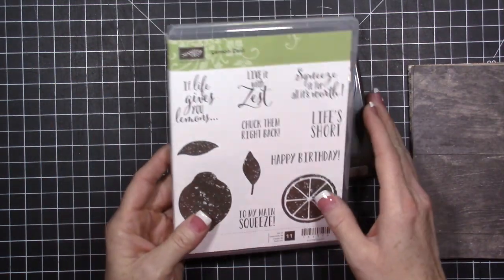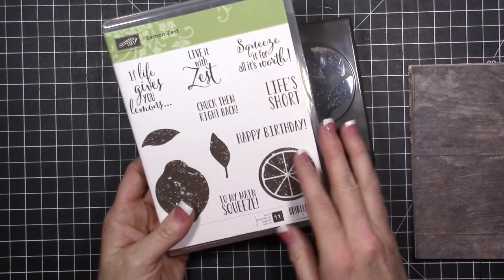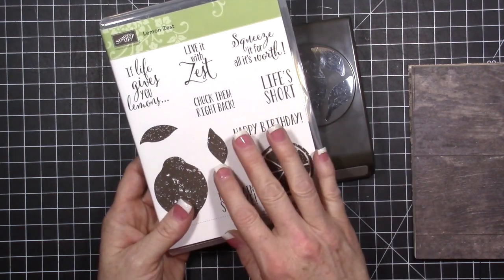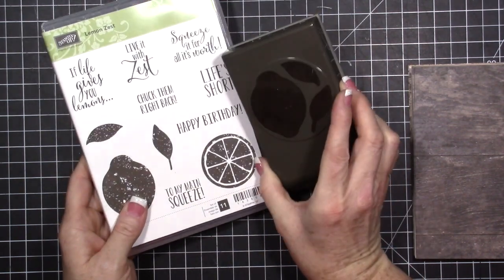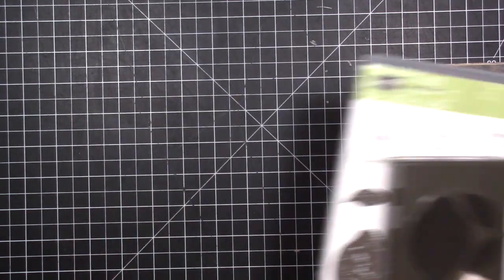So today I'm going to use this bundle. It is the Lemon Zest bundle. That means it's bundled together. You can get the stamp set and the coordinating punch that goes with it. You can get all of that together.